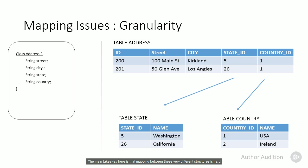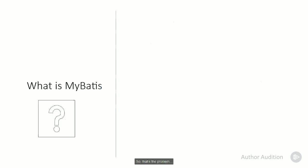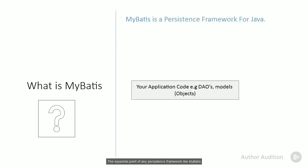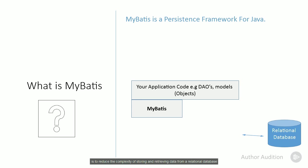The main takeaway here is that mapping between these very different structures can be quite hard, and any framework that helps simplify this mapping, like MyBatis, is a very good thing. So that's the problem. Now let's take a look at the solution, MyBatis. The essential point of any persistence framework, like MyBatis, is to help reduce the complexity of storing and retrieving data from a relational database.